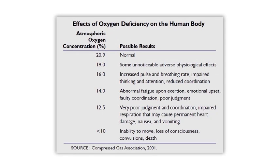Normal oxygen is considered 20.8 or 20.9%. At 19% oxygen, we're going to have some unnoticeable adverse physiological effects — we're not getting enough oxygen to the cells at that point. At 16% oxygen, we're going to see an increased pulse and breathing rate, impaired thinking and attention, and reduced coordination. It's going to be hard to concentrate.